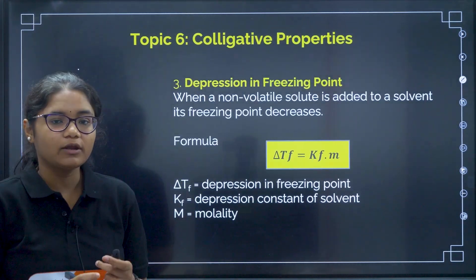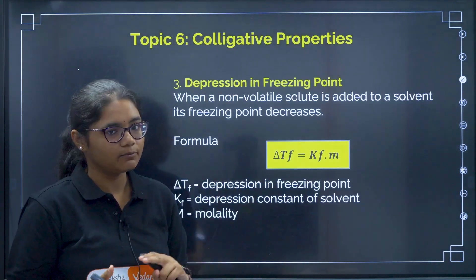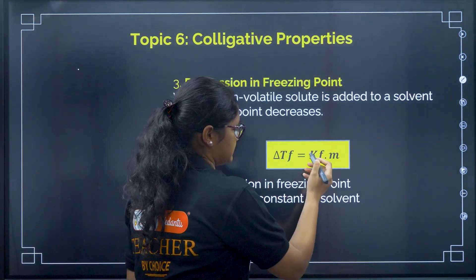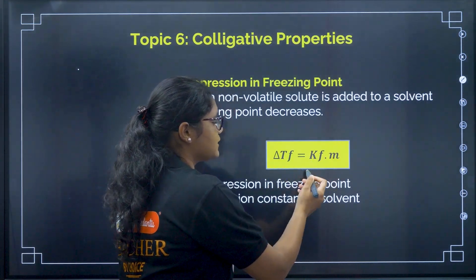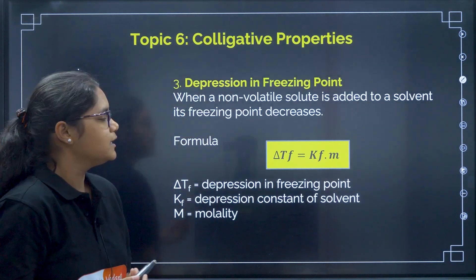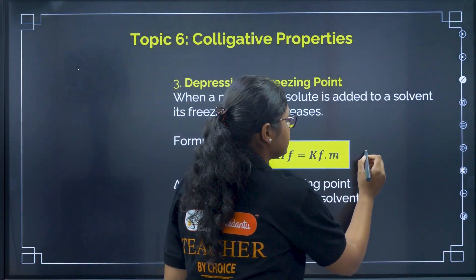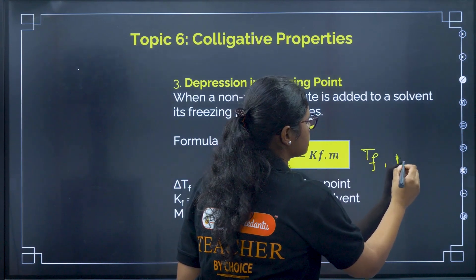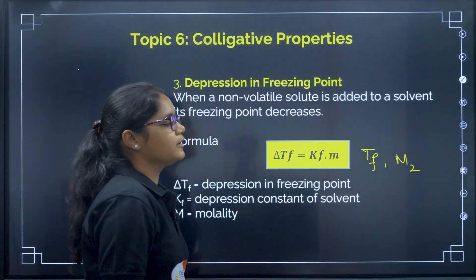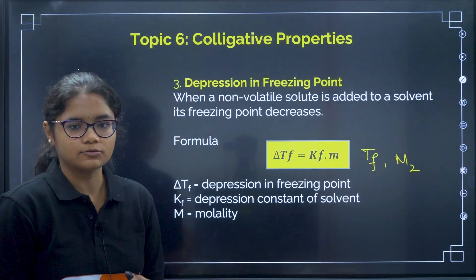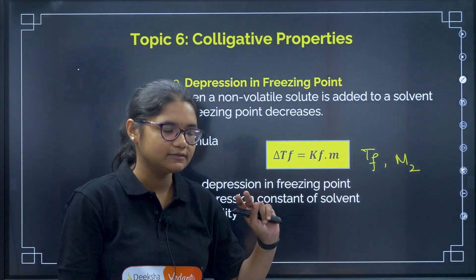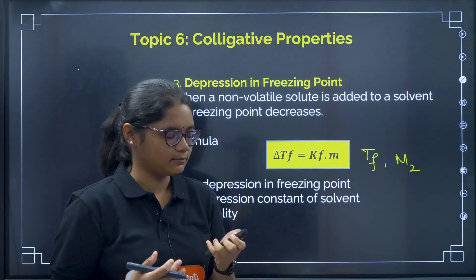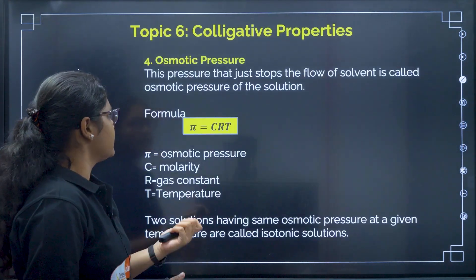Depression in freezing point is very similar to elevation in boiling point. The formula is ΔT_f = K_f × m. You may be asked to calculate the freezing point of the solution or the molecular mass of the solute. Generally these two question types are asked. Prepare this formula and do some numericals.